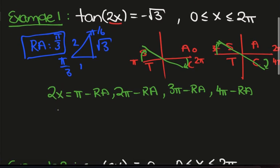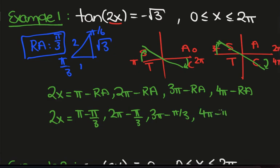So what we see is that 2x is pi minus pi on 3, 2 pi minus pi on 3, 3 pi minus pi on 3, and 4 pi minus pi on 3.